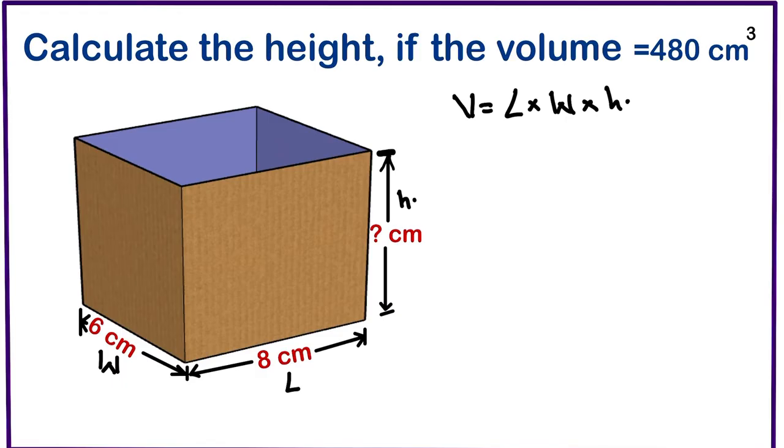We have the volume which is 480, should be equals to the length which is 8 times the width which is 6 times h. So we are going to have 480. If we multiply 8 times 6 that would give us 48h.